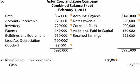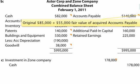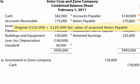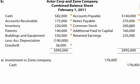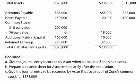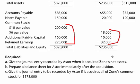For the liabilities: accounts payable — the original $85,000 plus $55,000 fair value of acquired accounts payable — equals $140,000. Notes payable: $150,000 original plus $120,000 of acquired notes payable. Then for common stock — this confuses some people — this does not change. We just acquired the net assets, so common stock of $200,000, additional paid-in capital of $160,000, and retained earnings of $225,000 remain the same as Aster's original numbers. We don't do anything with Zone Company's equity numbers.